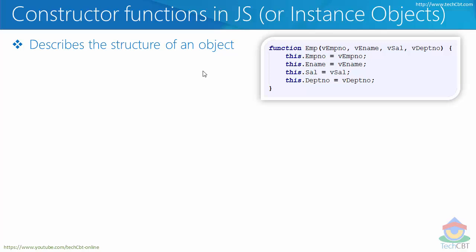So what exactly is a constructor function? It describes the structure of an object. Essentially you are creating a data type, and that data type is going to have certain members. Each of those members could be either properties or methods. In this case you are creating a particular data type called EMP, which is a user-defined data type that can internally have four properties: employee number, name, salary, and department number.